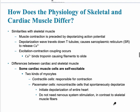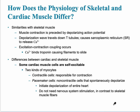How does the physiology of skeletal muscle and cardiac muscle differ? The similarities are that muscle contraction is preceded by a depolarizing action potential. The wave travels down the T-tubules, causing the sarcoplasmic reticulum to release calcium, which binds to troponin, just like in skeletal muscle. But cardiac muscles are self-excitable — if you take a cardiac muscle and put it in a petri dish and add sodium or calcium, it will contract on its own. Skeletal muscle definitely cannot do that.